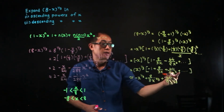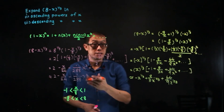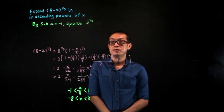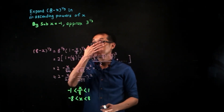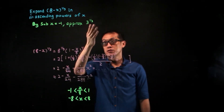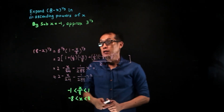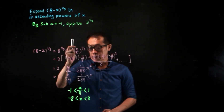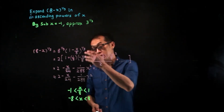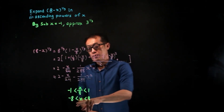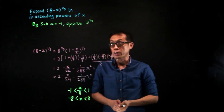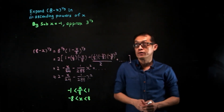We stop at the first three non-zero terms as stated in the question. For the last part, they ask us to substitute X equals minus 1 to approximate 3 to the power of one-third. First, we check: X = −1 is within the valid range of −8 to 8, so we can proceed.